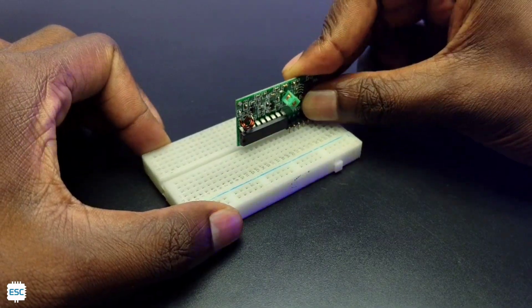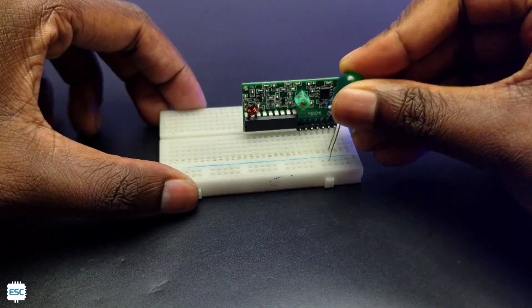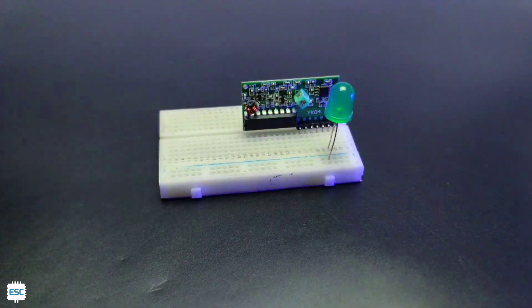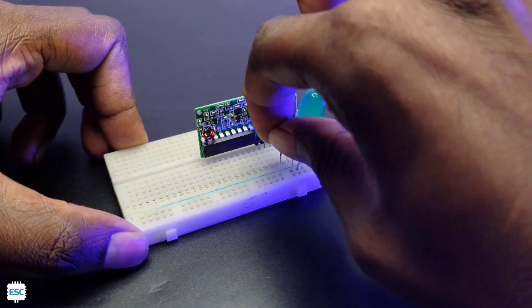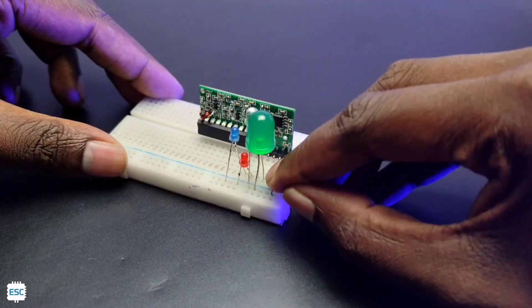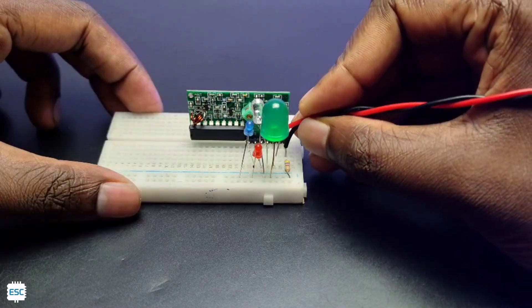For that, I placed the receiver module on a small breadboard and then I connected four LEDs to the output pins of the receiver. I connected the positive LEDs to the receiver pins, then I added a resistor to the negative side and connected 5V power supply.